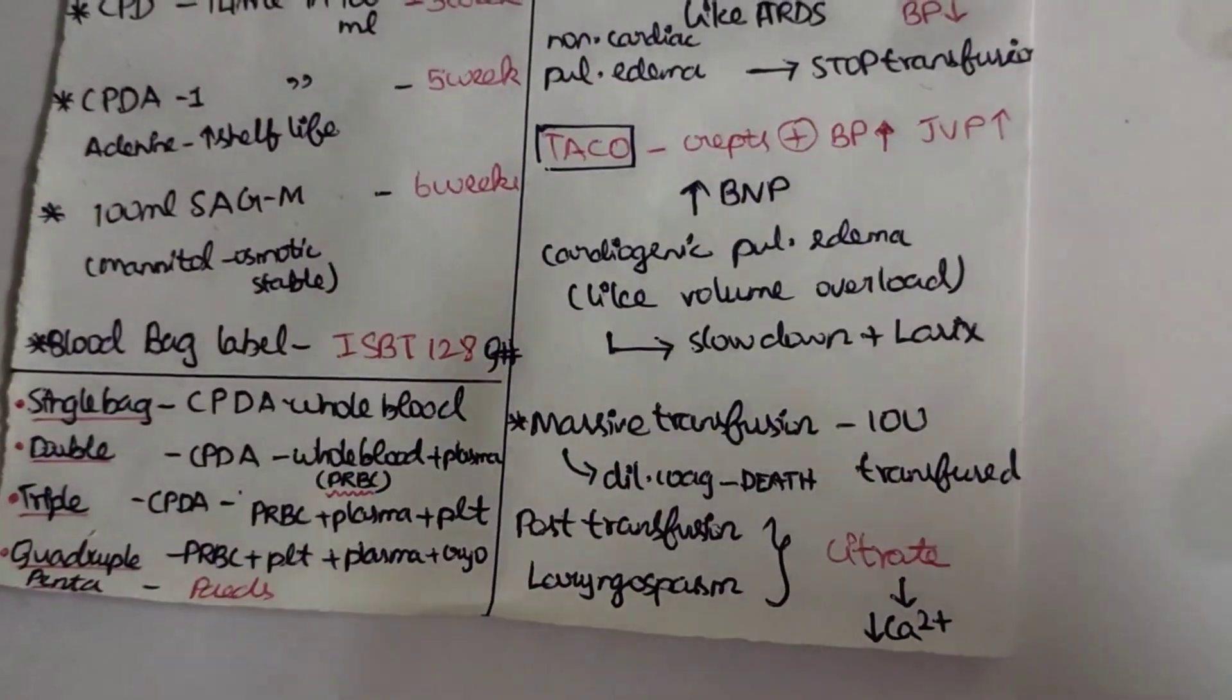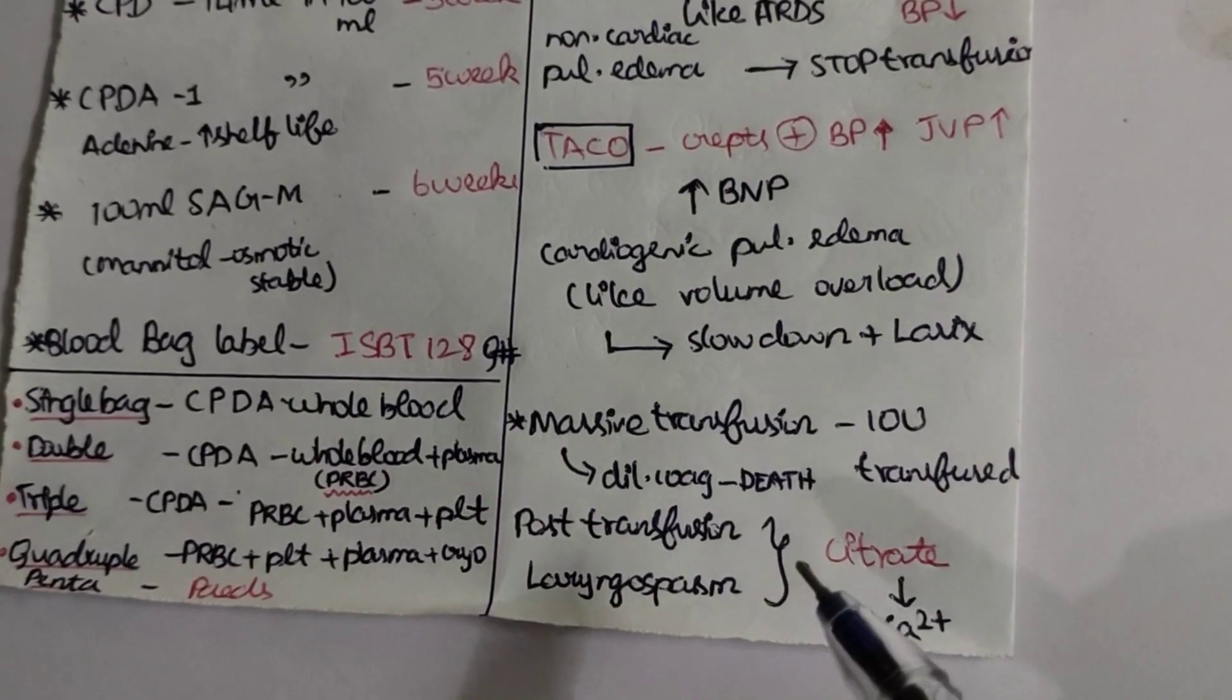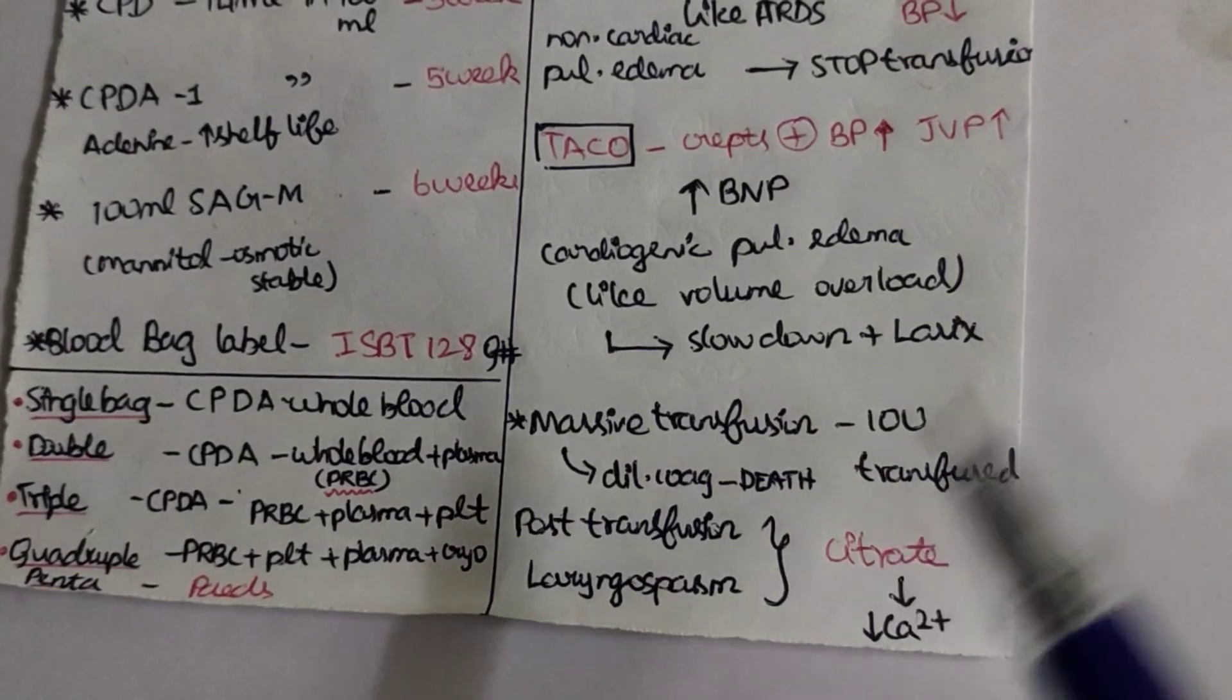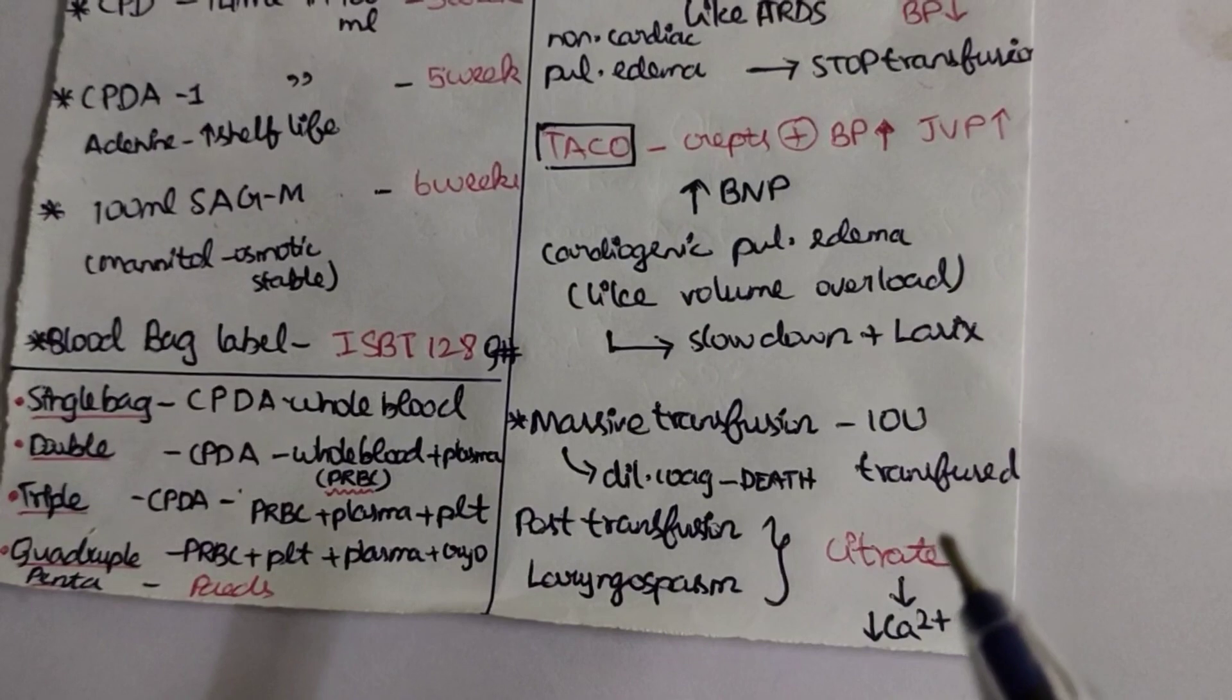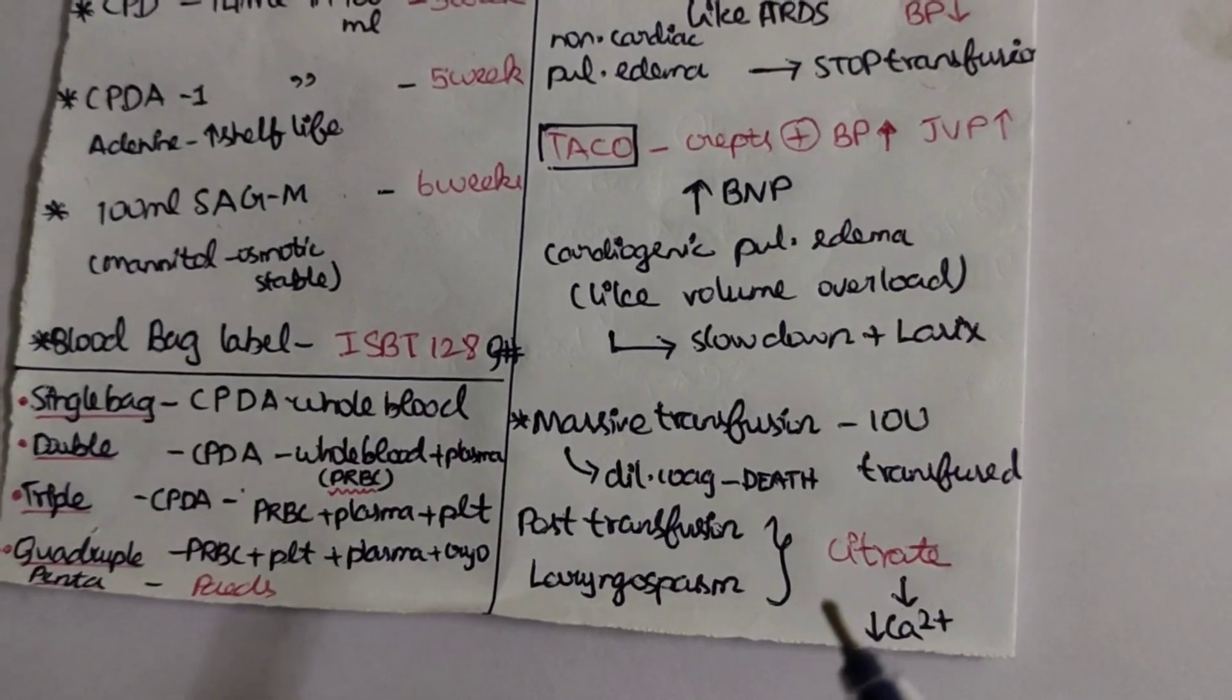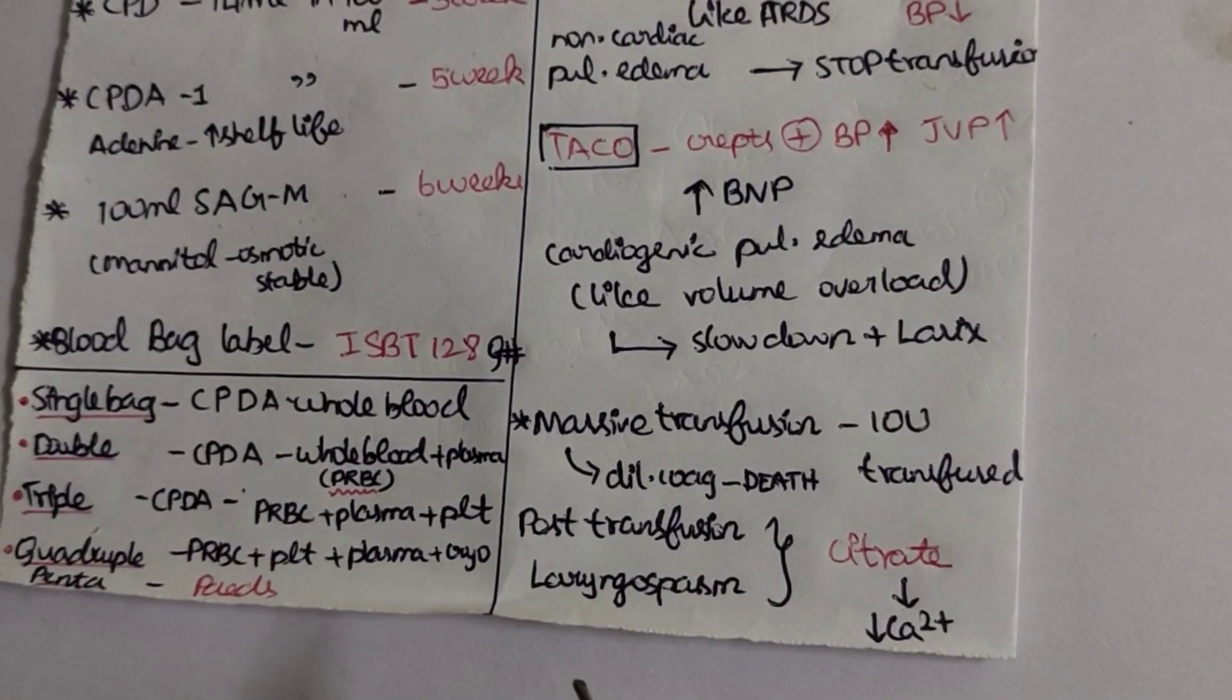When can a doctor say a patient had a massive blood transfusion? If a patient receives 10 units of blood, they come under the criteria of massive blood transfusion. Under massive blood transfusion, there will be an increase in citrate in the patient's body, which causes hypocalcemia, thereby causing post-transfusion laryngospasm and dilutional coagulopathy.